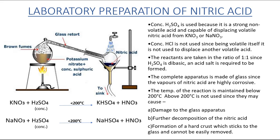Nitric acid forms fumes which pass through the retort and are collected in the round bottom flask. Cold water is poured over the flask to condense the vapors. The brown vapors condense as nitric acid. Concentrated sulfuric acid is used because it is a strong non-volatile acid capable of displacing volatile nitric acid from potassium nitrate or sodium nitrate.